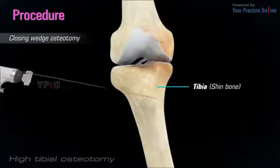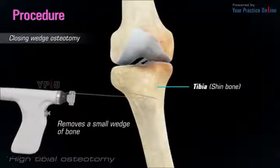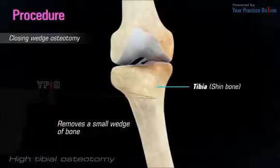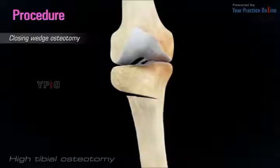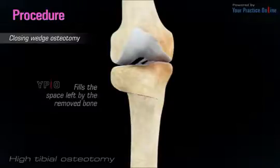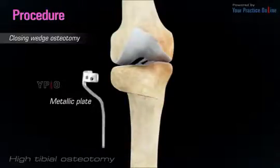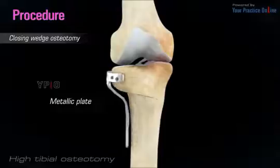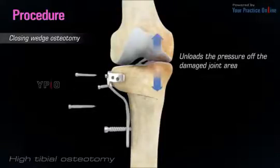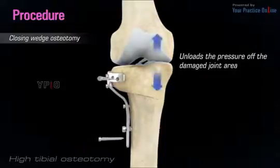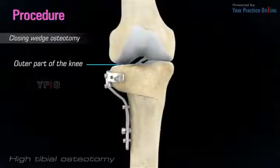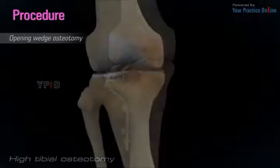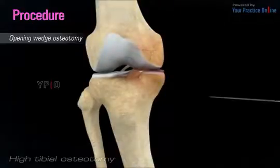In the closing wedge procedure, the surgeon makes an incision in front of the knee and removes a small wedge of bone from the upper part of the tibia or shin bone. This manipulation brings the bones together and fills the space left by the removed bone. The surgeon then uses plates and screws to bind the bones together while the osteotomy heals. This procedure unloads the pressure off the damaged joint area and helps to transfer some of the weight to the outer part of the knee where the cartilage is still intact.